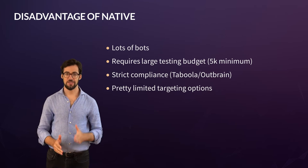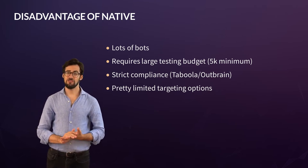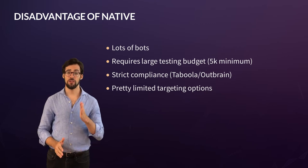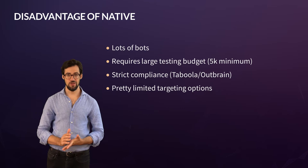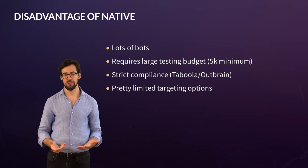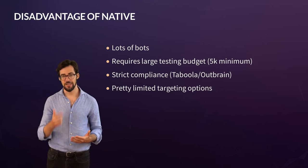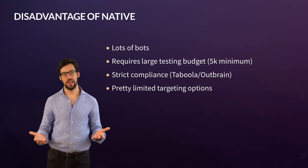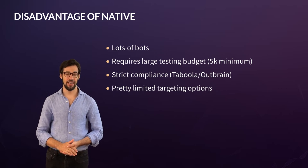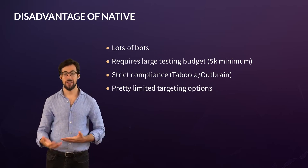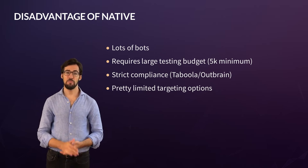What are the disadvantages of native? First of all, there's a lot of bots — especially on Rev Content, Content.ad, and GetContent. This is true for every traffic network, but there's a ton of bots you have to deal with. The only way you can really discover this is by buying traffic and blocking the bad publishers that are heavy with bots. Filtering out the bots is just something you're going to have to deal with — a pain in the butt, but part of the game.